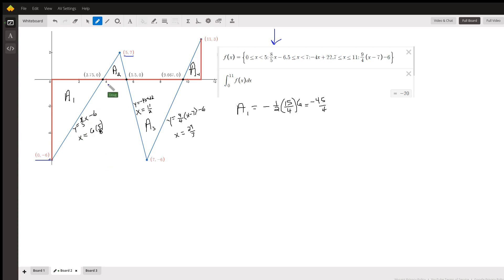2 minus negative 6, over 5 minus 0, and the y-intercept is negative 6. And then if you wanted to find this point right here, you could say, well, when y is 0, x is 15 fourths, it looks like.